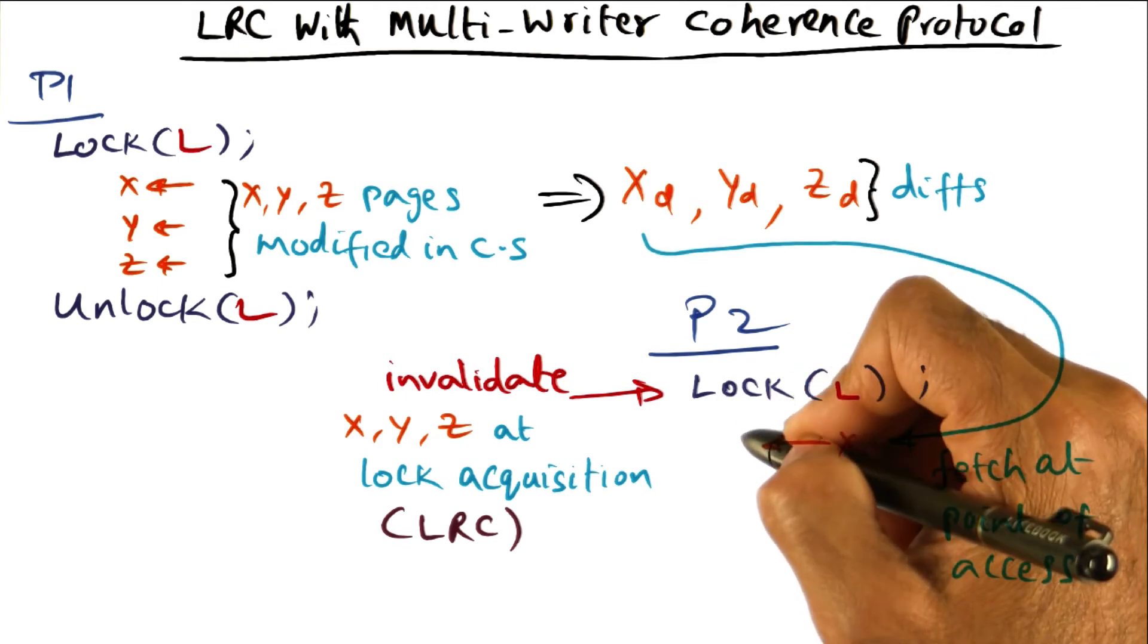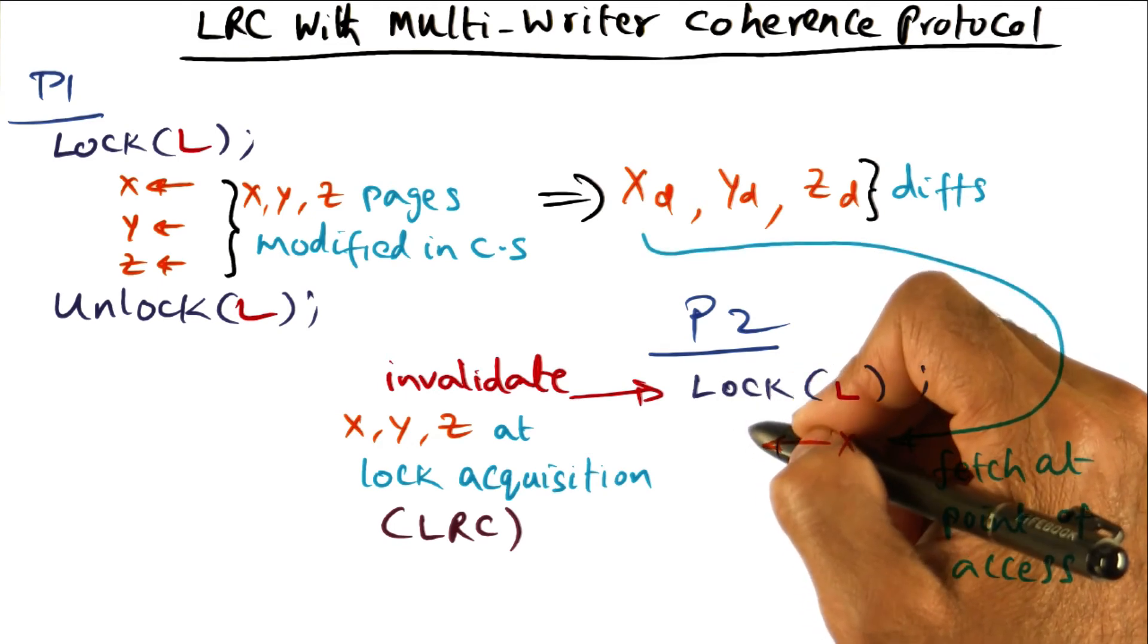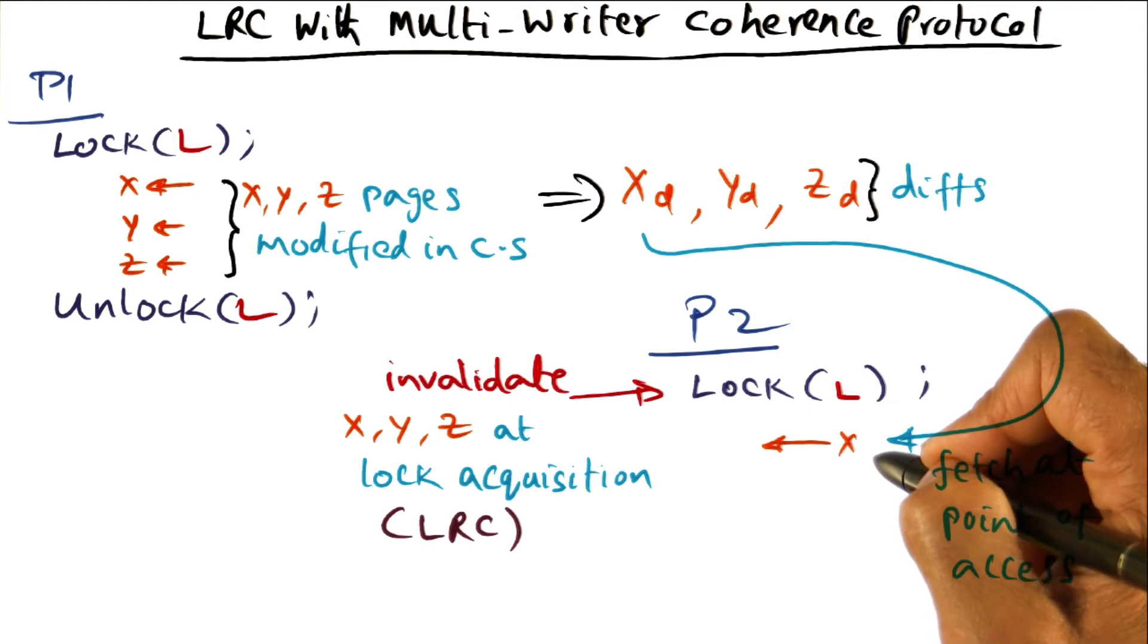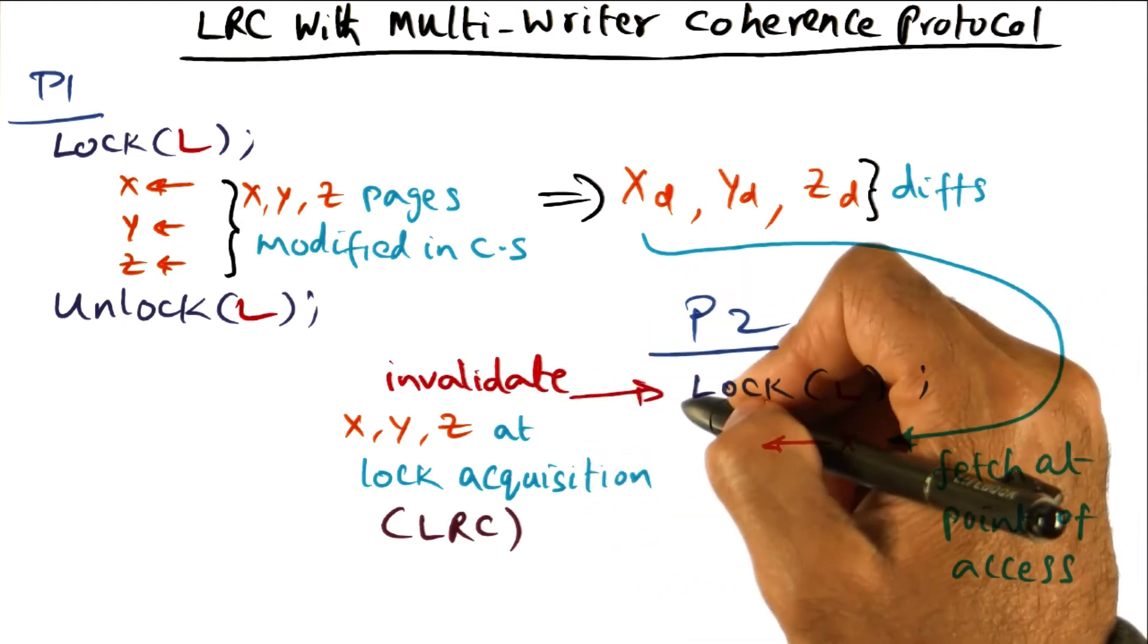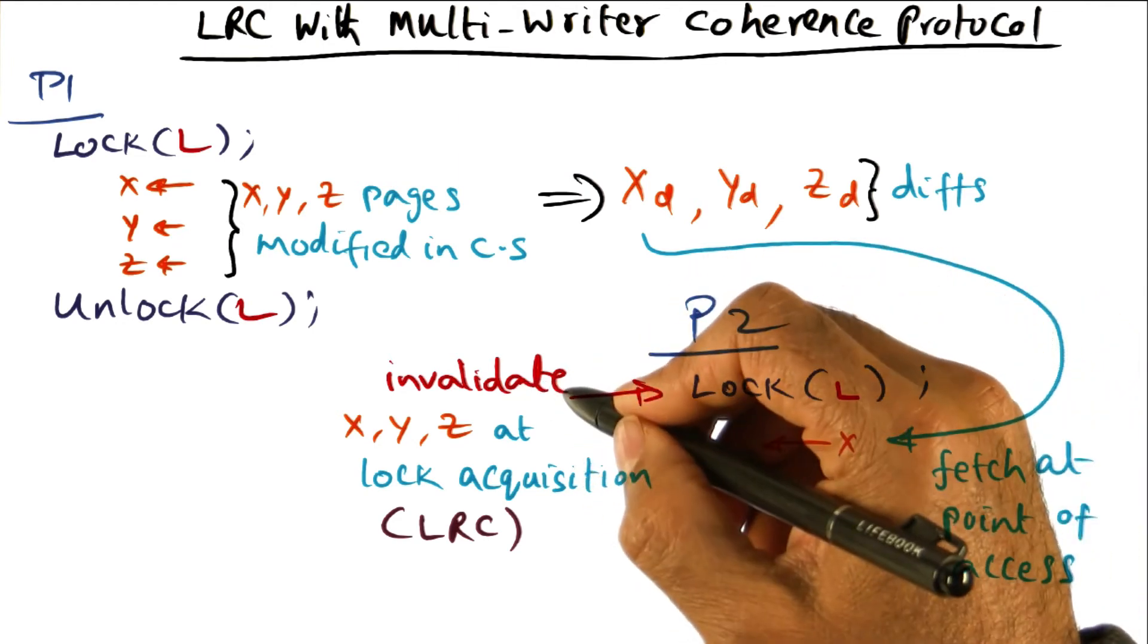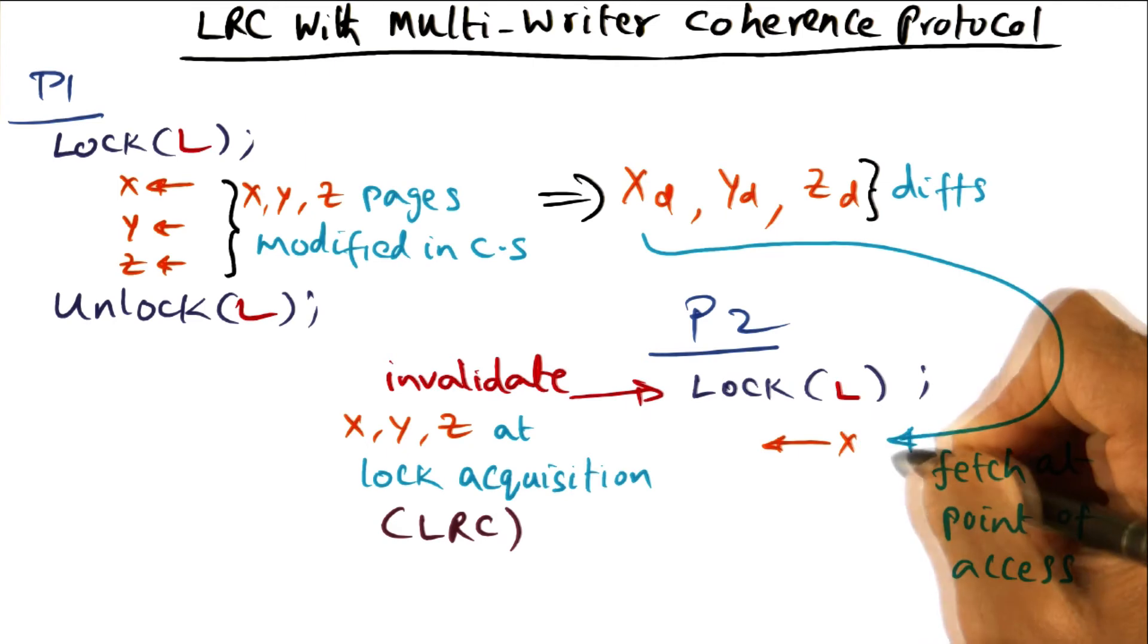Now once it is in the critical section, it can do whatever it wants. But if it tries to access page X, at that point, we know that page is invalid because we've done that at the beginning of this critical section—invalidated page X.